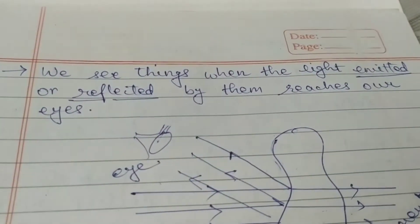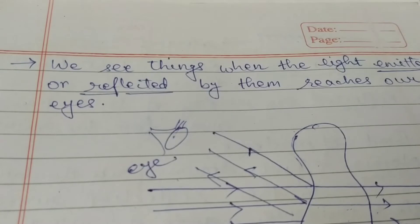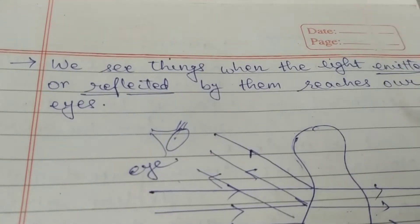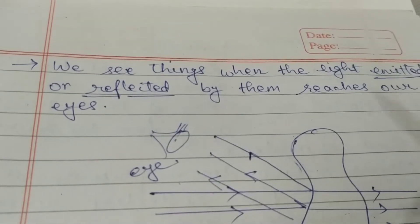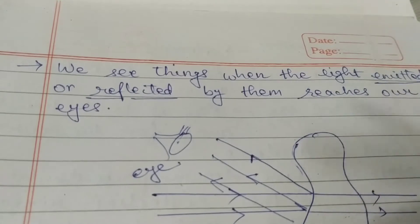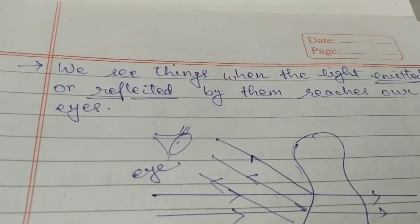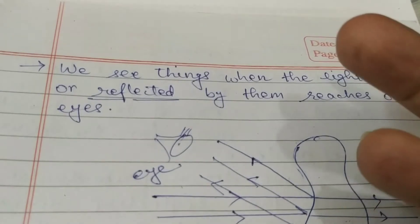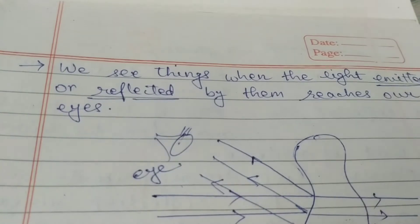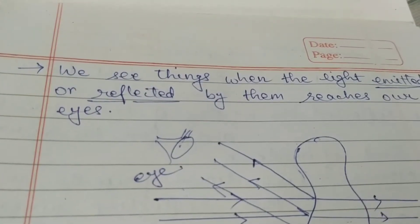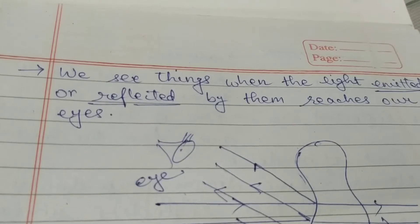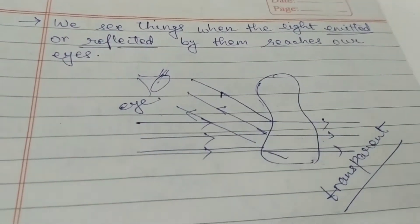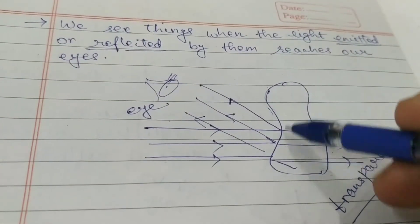What do these words mean? Emitted means a body is producing light of its own and sending it to our eyes. Reflected means light from some source is falling on that object, being reflected from it, and if that reflected light reaches our eyes, we are able to see that object.